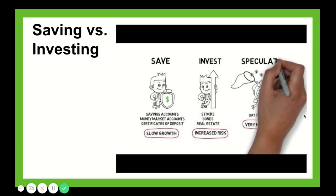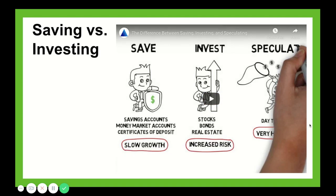Now that you're back, we're going to move on to make the distinction between saving and investing. This relates to inflation because you want to make sure that you are investing or getting some return on your savings so that if you put $10 in the bank today, it still gives you $10 of purchasing power many years from now when you use it. Let's watch this video to distinguish between saving and investing.